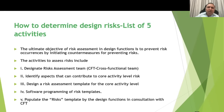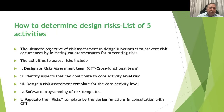How to determine design risk? Five activities have been identified for assessing risks in order to prevent them by initiating countermeasures — that is the ultimate objective. The activities include: designating a cross-functional risk assessment team; identifying aspects that can contribute to core activity-level risk; designing a risk assessment template at the core activity level; software programming of this template; and populating the risk template by the design function in consultation with the cross-functional team, comprising designers from architecture, interior, MEP, project team, and quality assurance.